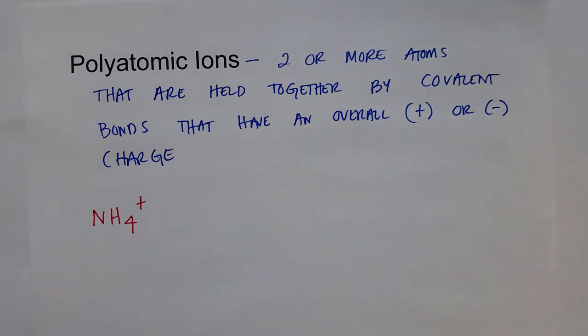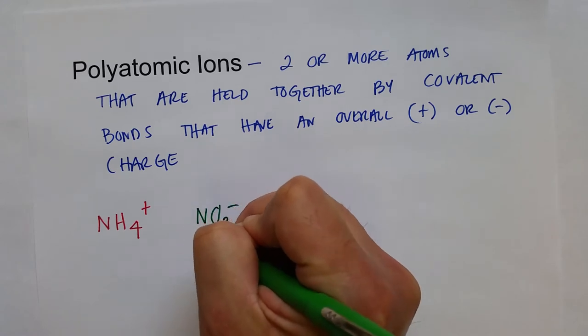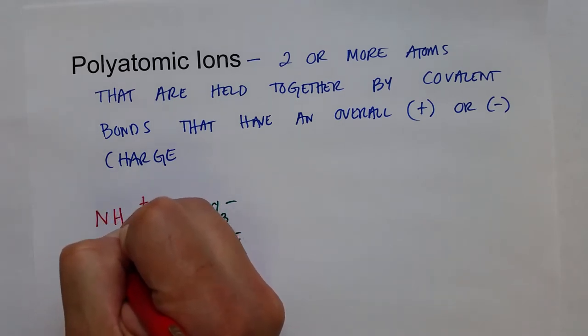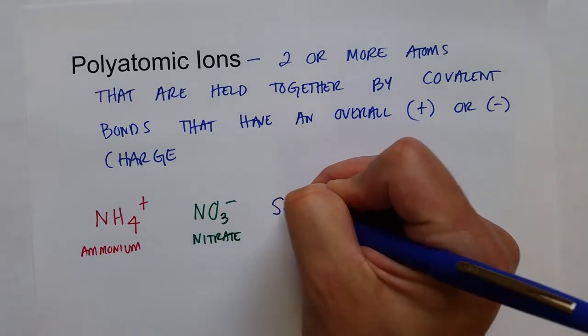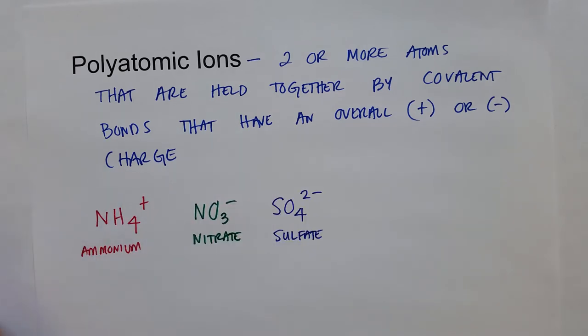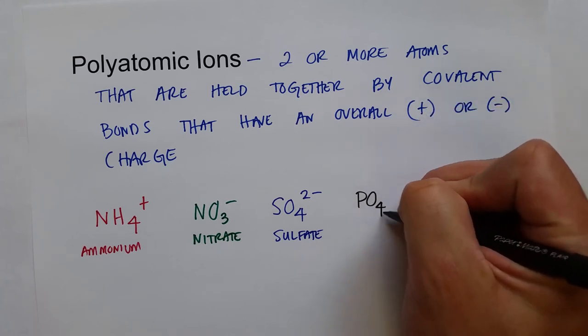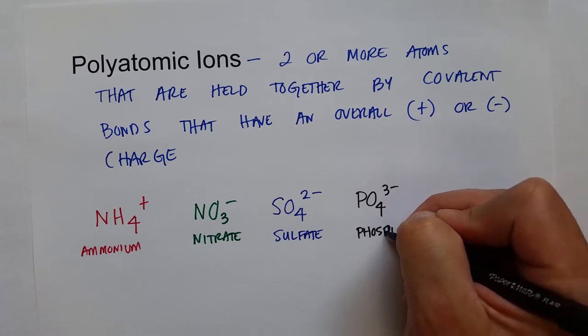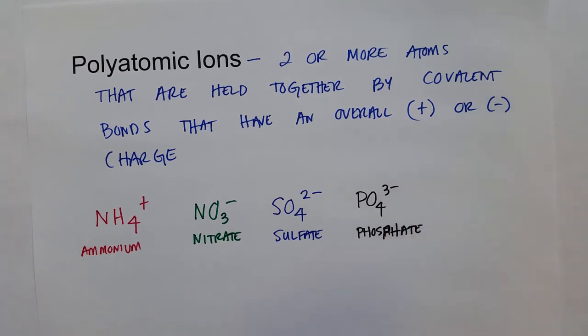Most of the other polyatomic ions that you run into have negative charges, such as the nitrate ion. And this was the ammonium. There's the sulfate polyatomic ion, which is SO4 two minus. And the phosphate ion, which is PO4 three minus. Phosphate ion.